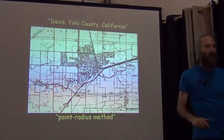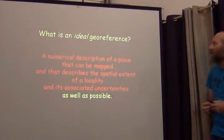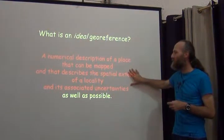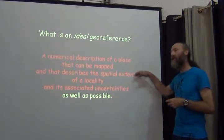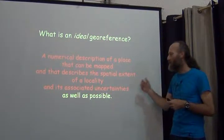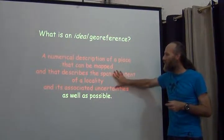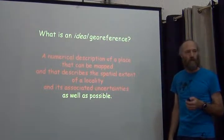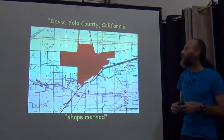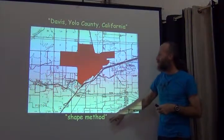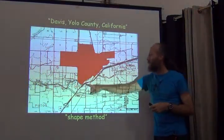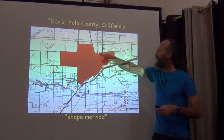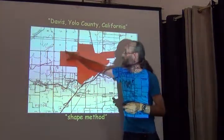An ideal georeference would allow us to capture all the spatial extent but leave out the things that are not Davis. An example of that would be the shape method, where our polygon contains the town of Davis and nothing more.